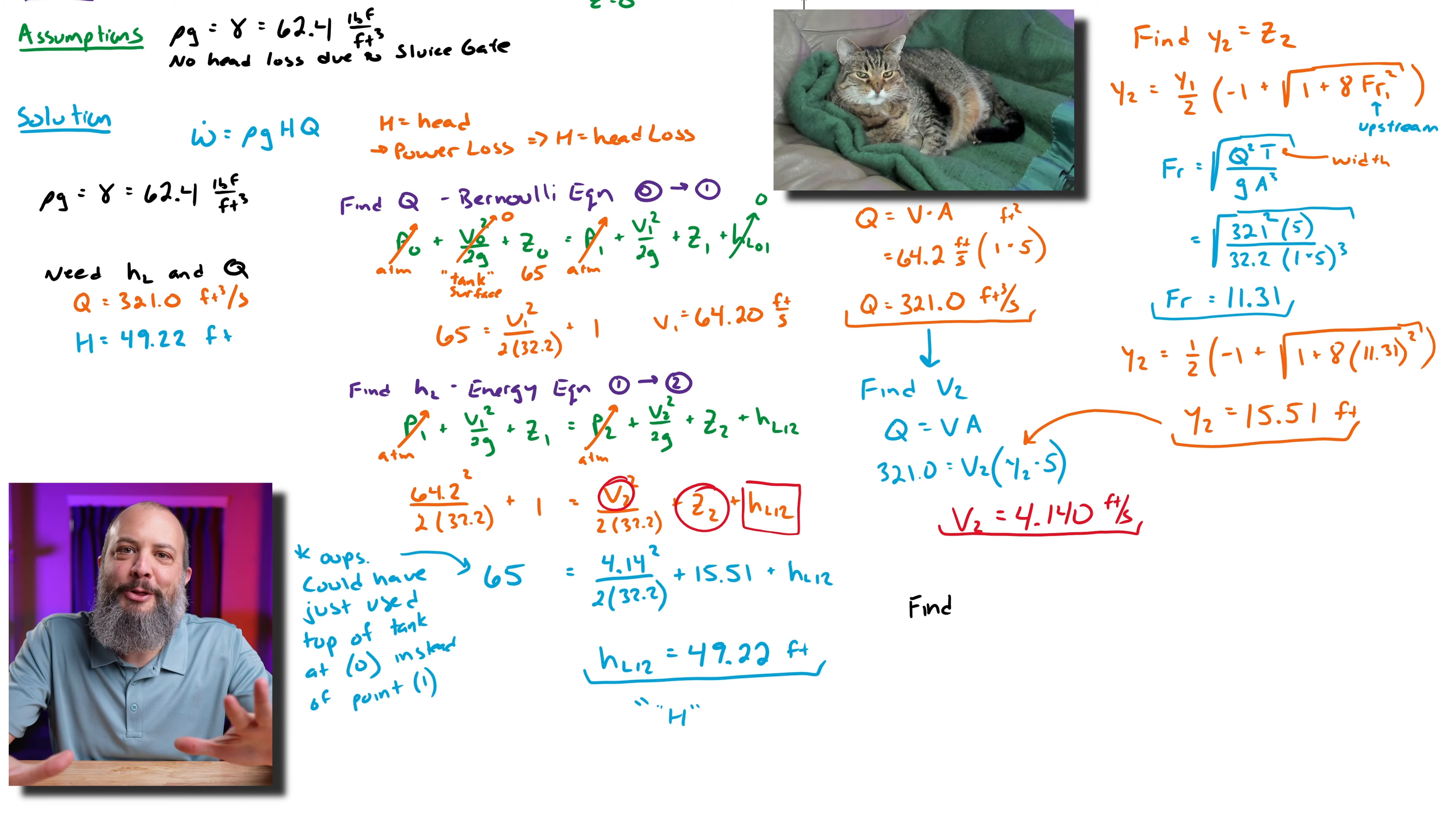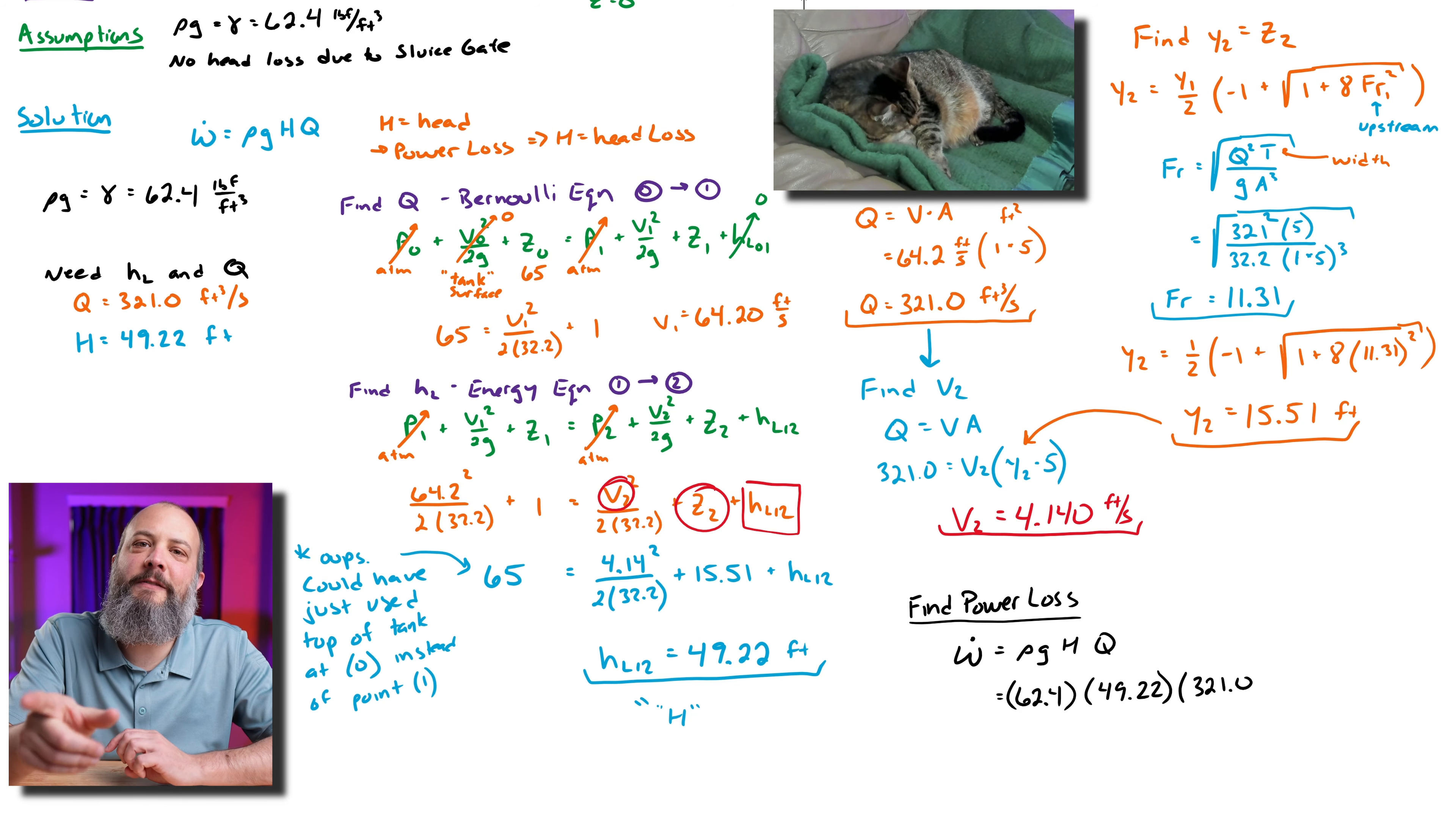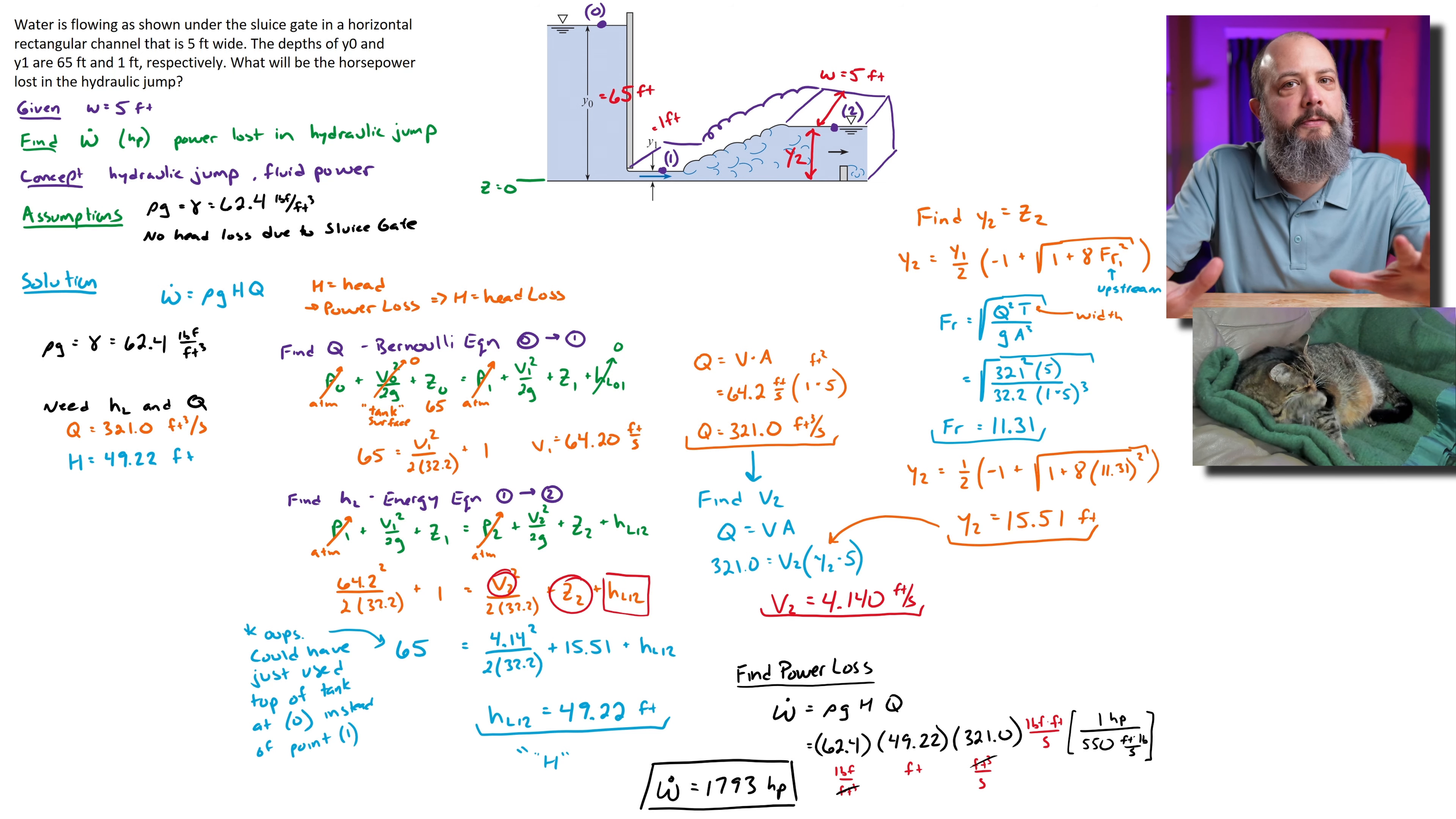Finally I can plug everything back into my power loss equation: density, gravity, head loss, volumetric flow rate. I'm combining density and gravity into one term when I'm using English units: 62.4 lbf/ft³. I've got my 49.2 feet of head loss and 321 cubic feet per second volumetric flow rate. Based on my unit analysis, if I just type into my calculator now I'm going to get pound-feet per second for power, but my problem statement said I wanted horsepower, so I've got one more conversion to add in. One horsepower is 550 foot-pounds per second. So that's going to give me a final power of 1793 horsepower that is removed from the system by the hydraulic jump.